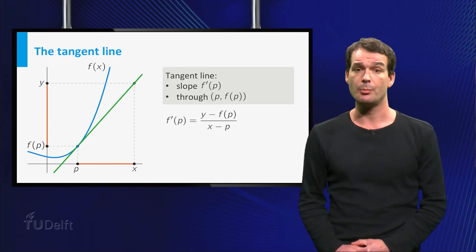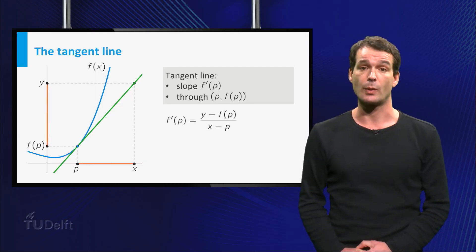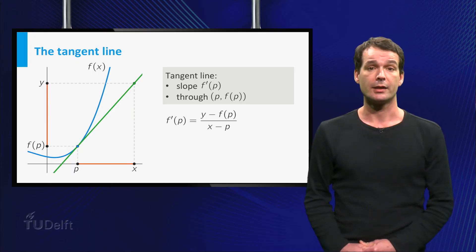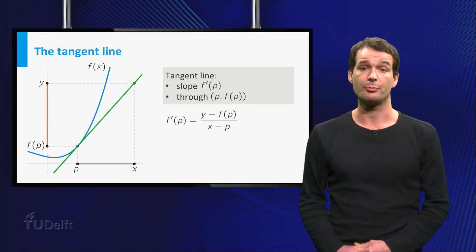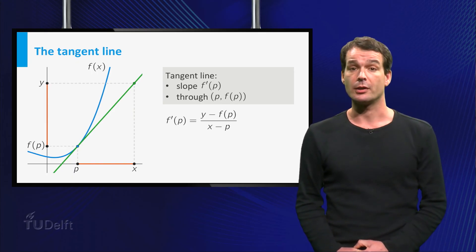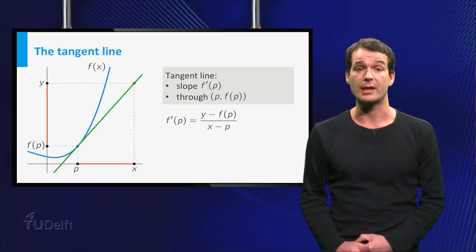Just as in the example, we now choose a point on the tangent line, and then the slope, which is f prime of p, is equal to the difference between y and f p divided by the difference between x and p.